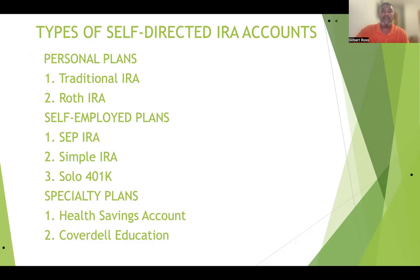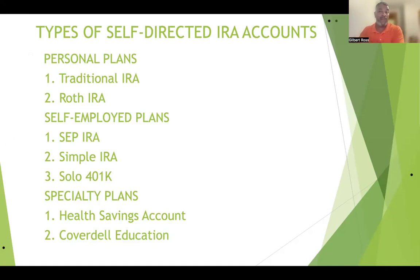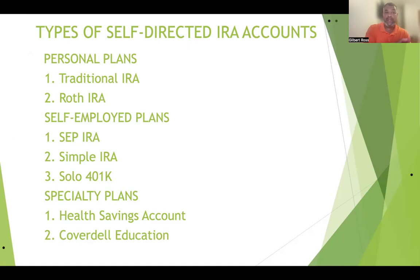So what are the types of self-directed IRAs? You have personal plans: the traditional IRA and a Roth IRA — you may have these accounts set up now, but you can also have them self-directed for more control over what you invest in. You have self-employed plans: if you have your own business and a retirement account, you can set it up as a SEP IRA, a SIMPLE IRA, or a solo 401k. I don't want to get into the specifics of any of these — if you want specifics, we can get you to a professional who can identify which account makes the most sense for your situation.